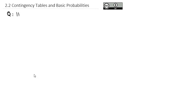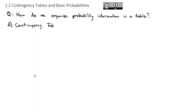In today's video, we're going to look at the question: how do we organize probability information in a table? Specifically, we're going to be in the context of what is called a contingency table, which is basically just a table that lists results in relation to two variables.